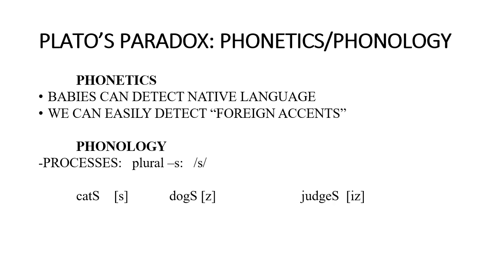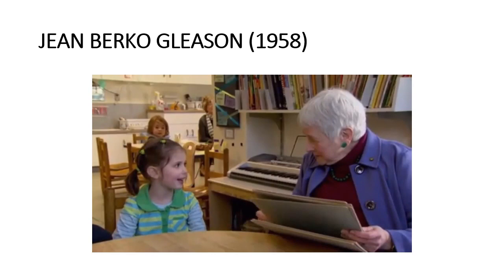When you give children a nonsense word like 'wug,' they know what the plural is, even though the word does not exist. Notice that we cannot say we learn a language by imitation, because in this case the word 'wug' does not exist, yet the child knows how to use the rule and correctly produce the word 'wugs'.